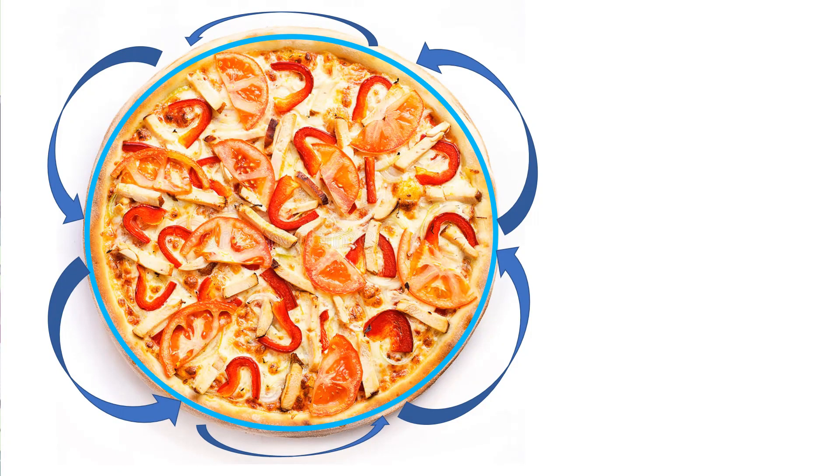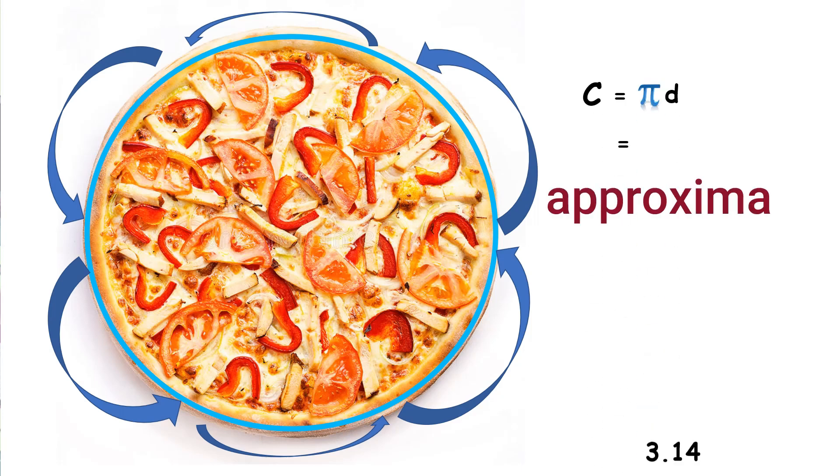Since we know already the formula how to find the circumference of a circle, we can now get the circumference of this pizza. Circumference is equal to pi times diameter. The value of pi is 3.14 times the diameter is 18 inches.